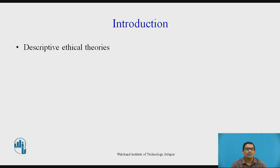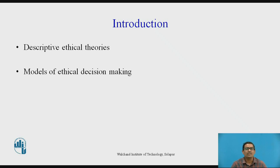Now we will be focusing on the descriptive ethical theories. In the descriptive ethical theories, what we are focusing on is how ethical decisions are actually made in business situations, and what are the factors and variables which affect the ethical decision making. The course of discussion now is the model of ethical decision making and the factors affecting decision making in the organization.